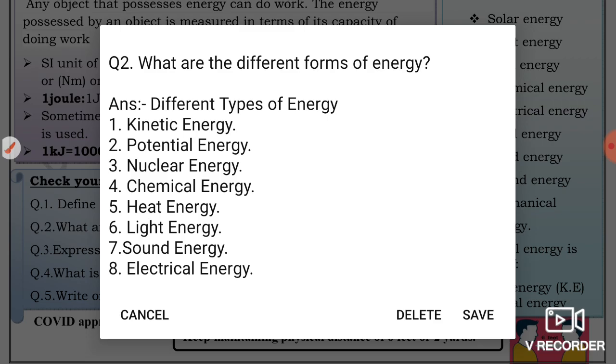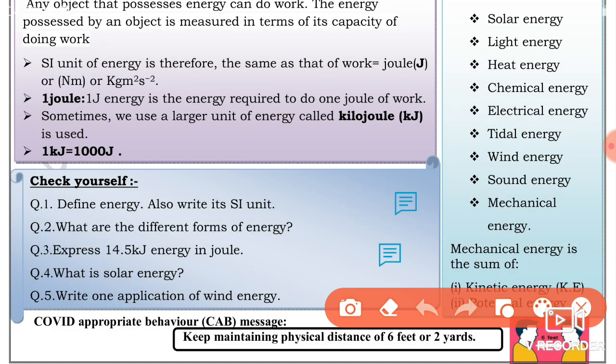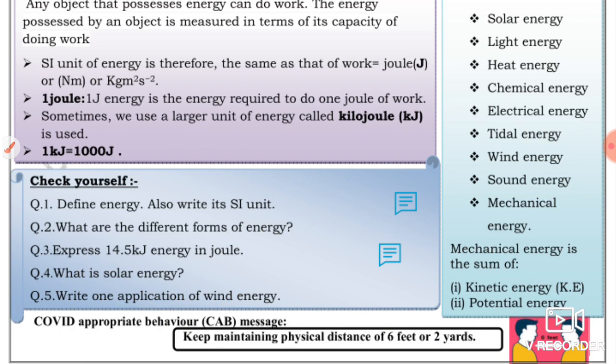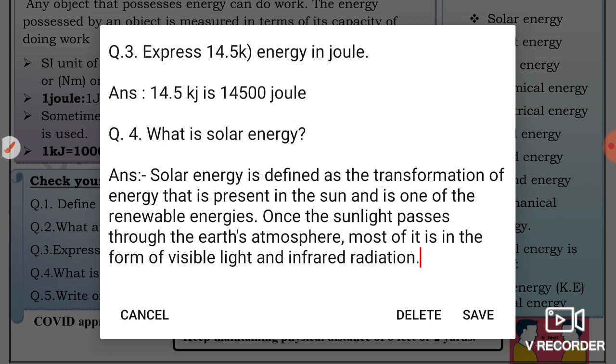Third question: Express 14.5 kilojoule energy in joule. 14.5 kilojoule. One kilojoule means 1000 joules, so you will multiply 14.5 by 1000, which equals 14,500 joules.